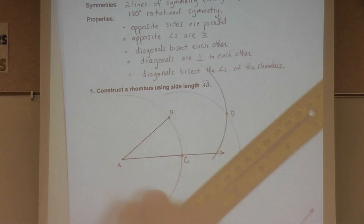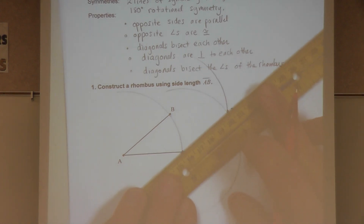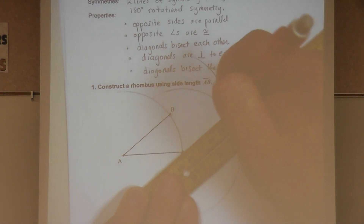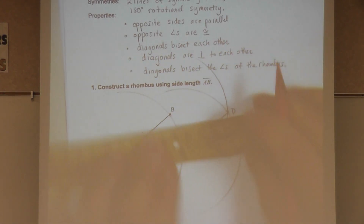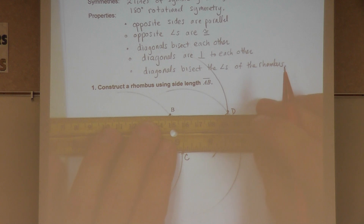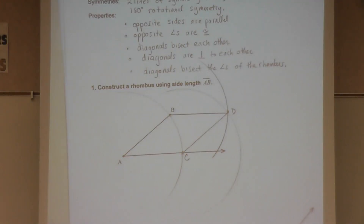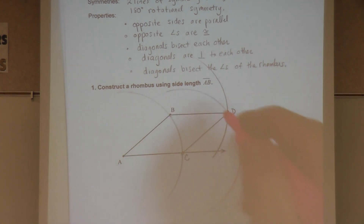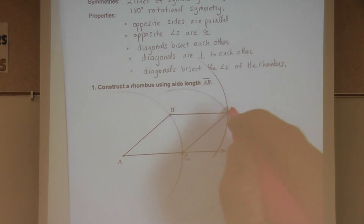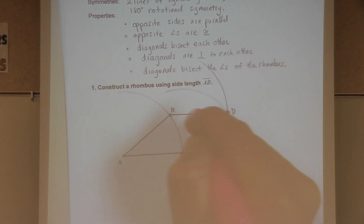So the sides are: side AB, side AC, side CD, and side BD. It's always a good idea to highlight what you're actually constructing. In this case we're constructing the rhombus — this is rhombus ABCD.